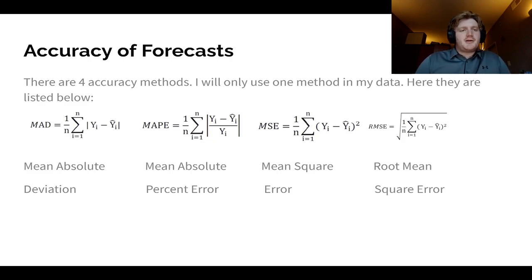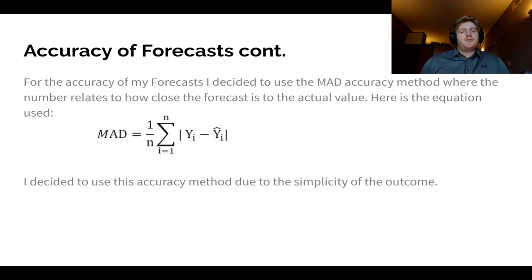So here is some of the accuracy methods for forecasts. I will only be using one of these in my data. And the one that I'm using is going to be the mean absolute deviation. So here's the equation. And the reason I decided to use this accuracy method is just due to the simplicity. You take the absolute error, and then you basically take the average of all of the absolute errors.